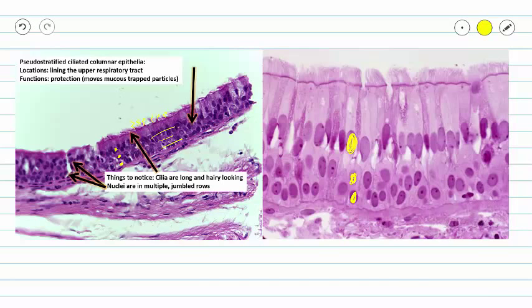So again we have these multiple rows of nuclei. And in this picture you can kind of see our cell outlines. So you can see that these cells are connected to the basement membrane which is really kind of cool. And then we have a nice view of our cilia up top looking like little hairs sticking up off the top of our cell. So I really like this picture on the right. I think it's a great one.